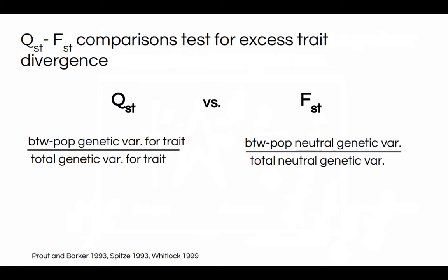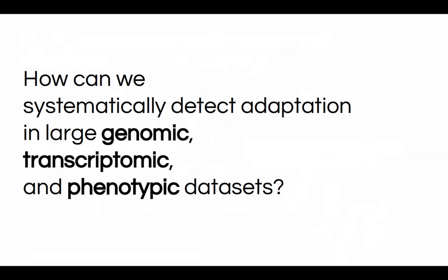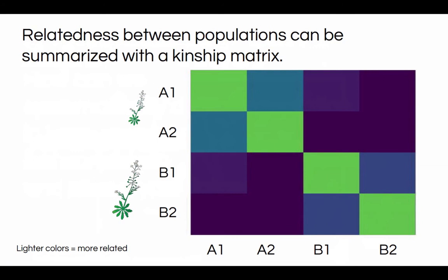Today I'm going to tell you about how we've been using this logic to try to understand what forces shape genetic variation within populations in systematic ways. As a field, we're starting to develop large genomic datasets where we have information from lots of individuals, sometimes across a continuous range of relatedness rather than distinct subpopulations. We might have lots of phenotypes, in particular molecular phenotypes like transcriptomes. There's a real opportunity here to understand how drift and selection together shape the phenotypic variation we see in nature.